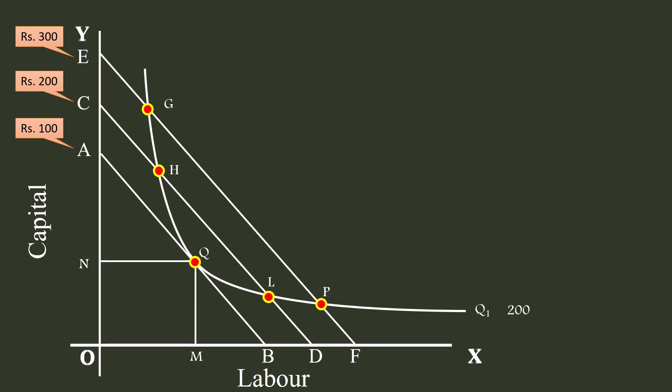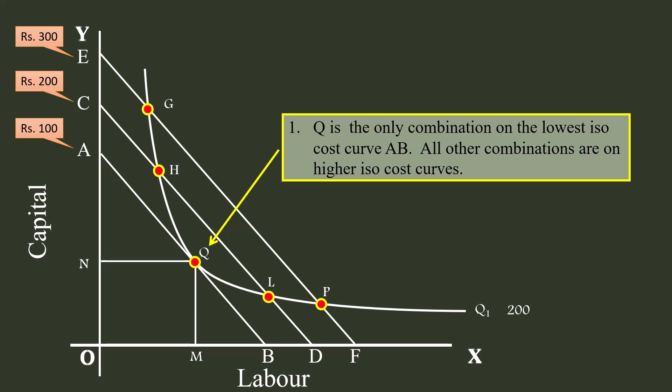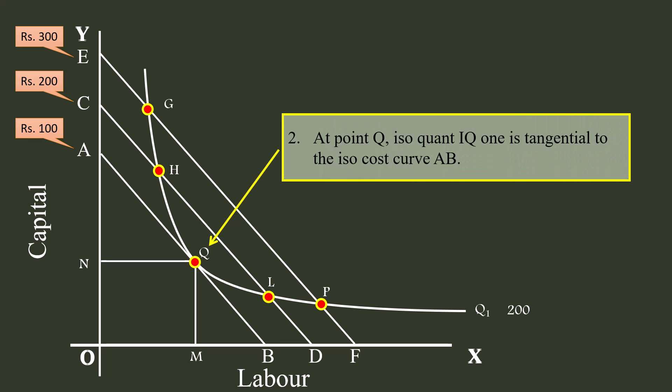Why? Let us examine the reasons one by one. First, Q is the only combination on the lowest isocost curve A-B. All other combinations are on higher isocost curves. Second, at point Q, the isoquant IQ1 is tangential to the isocost curve A-B.